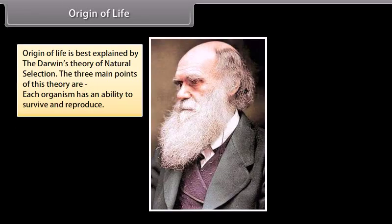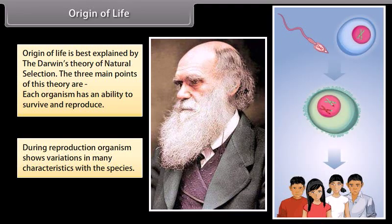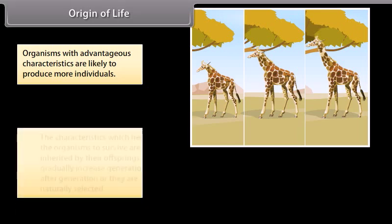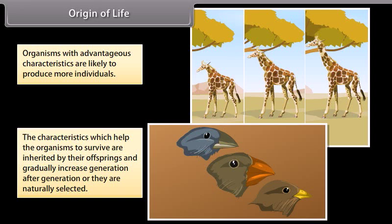The origin of life is best explained by Darwin's theory of natural selection. The three main points of this theory are: each organism has an ability to survive and reproduce; during reproduction, organisms show variations in many characteristics within their species; organisms with advantageous characteristics are likely to produce more individuals; and characteristics which help organisms to survive are inherited by their offspring and gradually increase generation after generation — they are naturally selected.